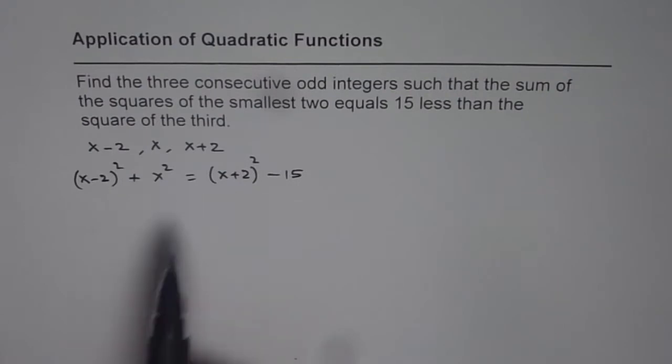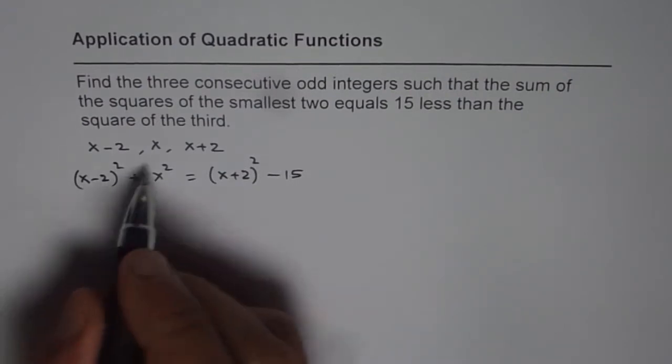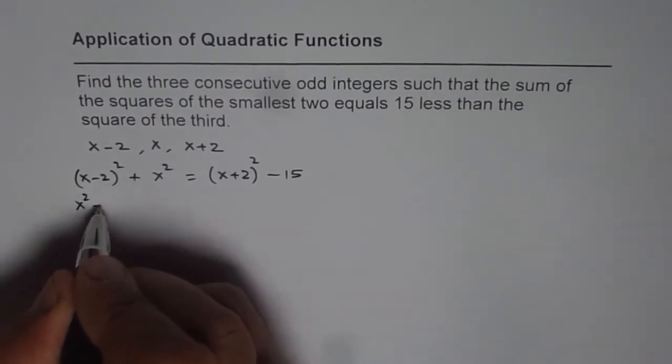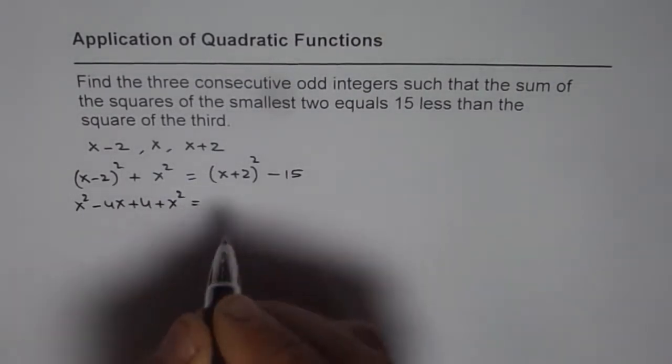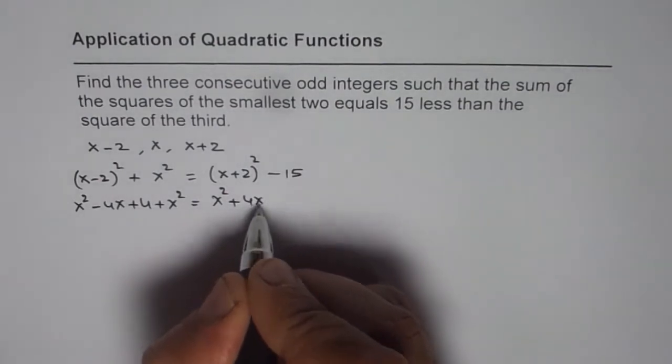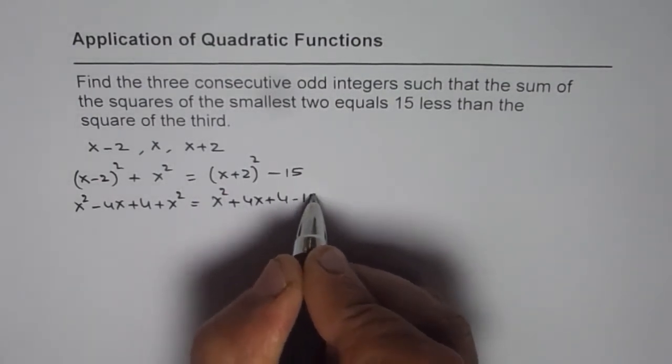Now we can bring all the terms to one side and solve. Let us expand. We get x² - 4x + 4 + x² = x² + 4x + 4 - 15.